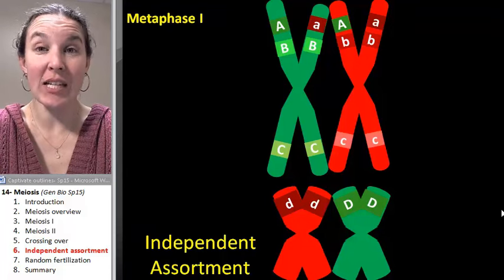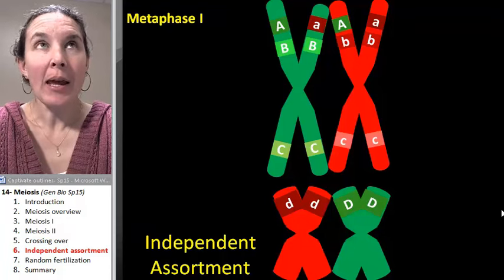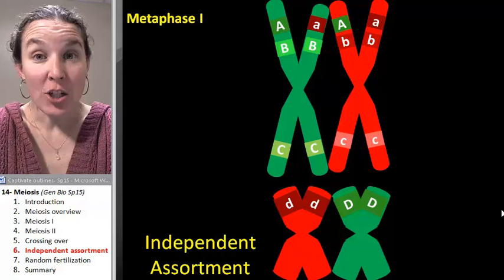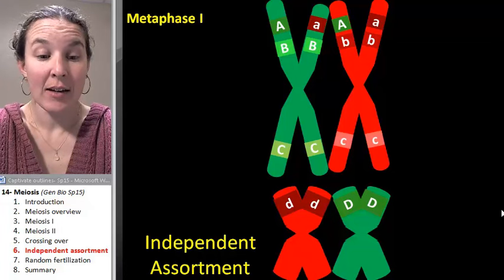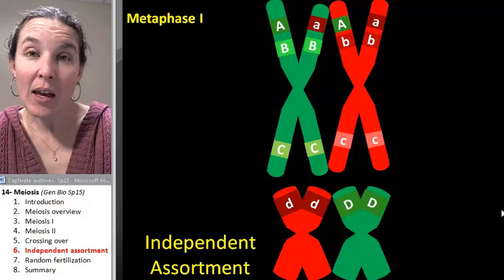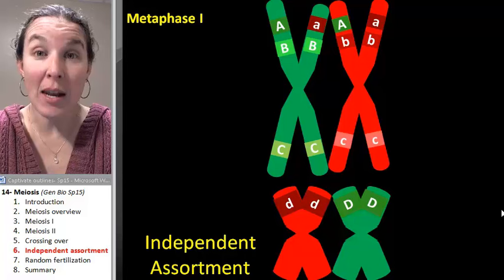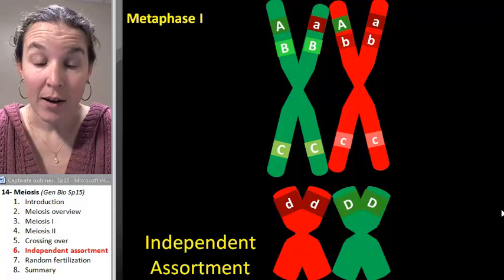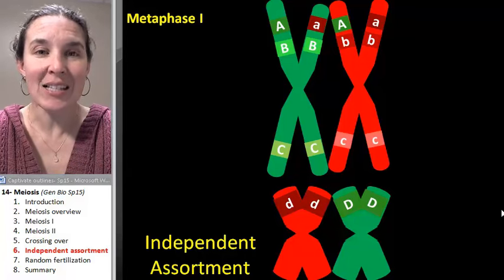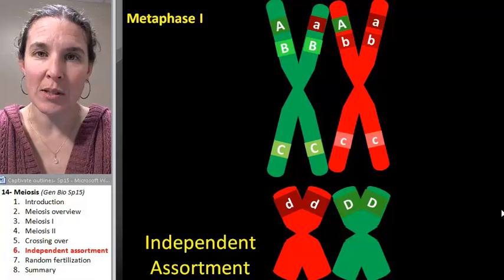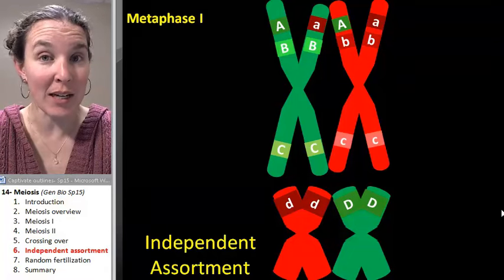Now, let's look at the concept of independent assortment. Independent assortment essentially is something that happens during metaphase one because homologous chromosomes line up on the metaphase plate randomly.